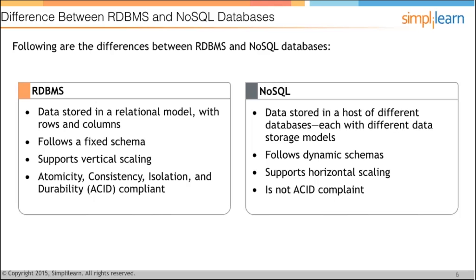But when we come to NoSQL data stores, all of them have different underlying mechanisms — different storage mechanisms, different processing mechanisms. So we can't say that MongoDB is the same as Cassandra. Both will have some similarities, but the underlying principles for storing and processing things will be different.